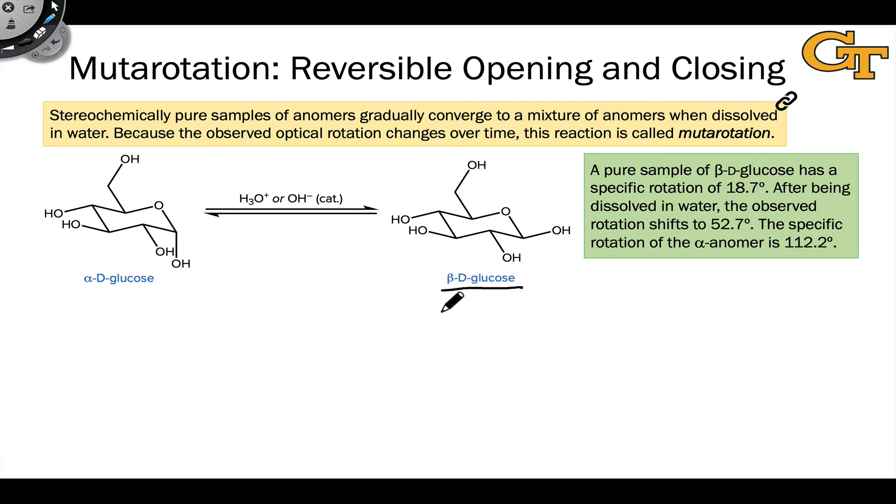Beta-D-glucose is clearly chiral with a large number of stereocenters and no plane of symmetry, and so it exhibits optical rotation. The optical rotation of a pure sample of beta-D-glucose is +18.7 degrees.